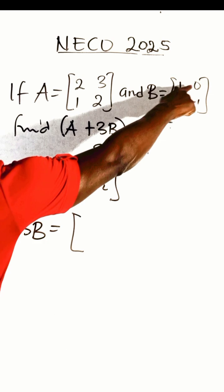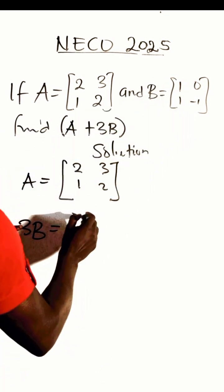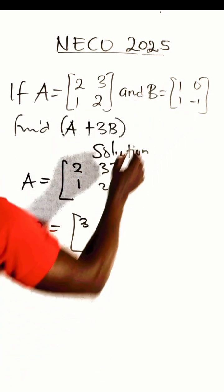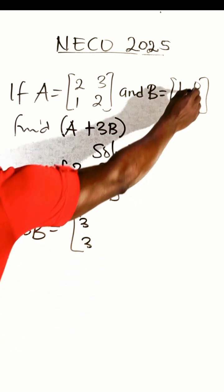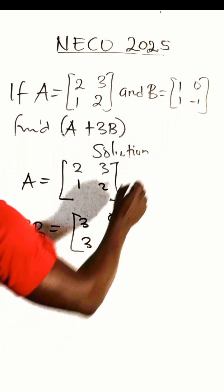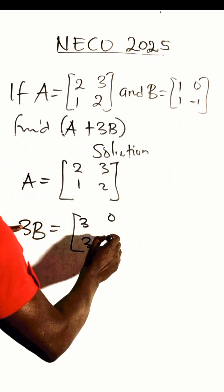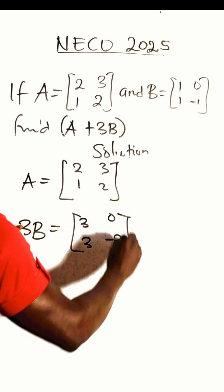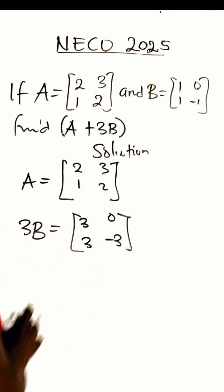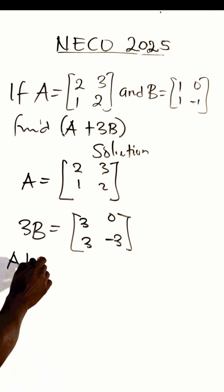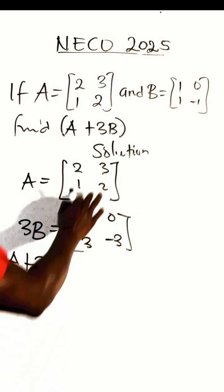So 3 times 1 is 3, 3 times 1 is 3, 3 times 0 is 0, 3 times minus 1 is minus 3. Now let's add this A plus 3B will be the addition of these two matrices.